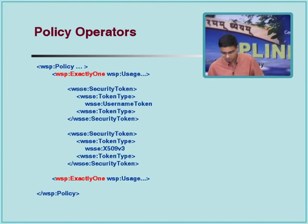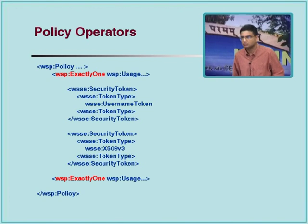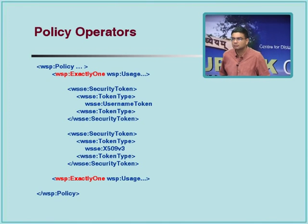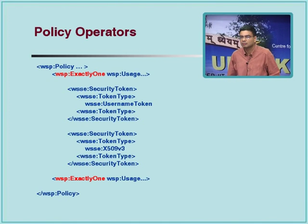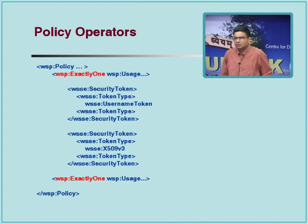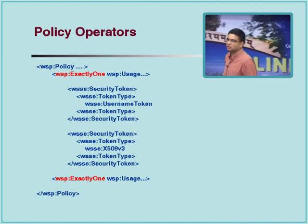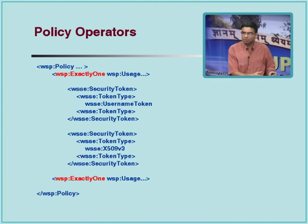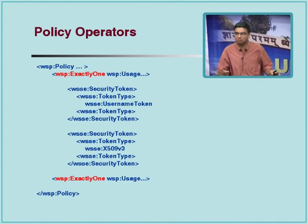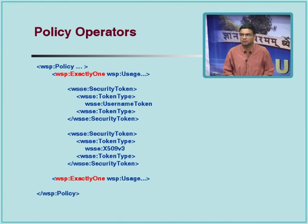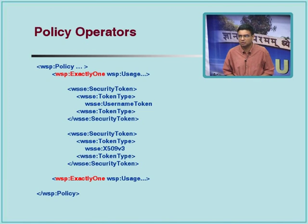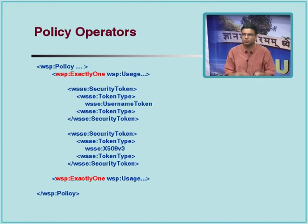Here's the example: a policy operator which is a collection of two different policy assertions. The first assertion says I'm going to take a username token — username-password type of authentication. The second one says I'm going to take a certificate to do authentication. Exactly one of these would be accepted. The policy is just saying: what are the conditions I'm going to put on this for you to access the service? How you set up the account is not part of the policy declaration.